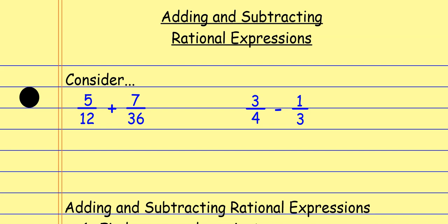Now, granted, when we start to look at it, it'll look more complicated, but it's the same basic principle. If I look at these first two examples — just regular old fractions — when I'm adding or subtracting fractions, remember, I need to have common denominators. So if I look at this first one, I have to think about the least common multiple, and the least common multiple between 12 and 36 is 36.